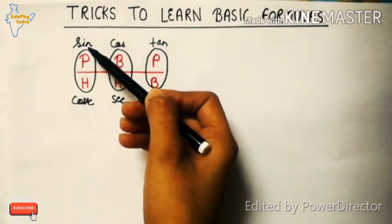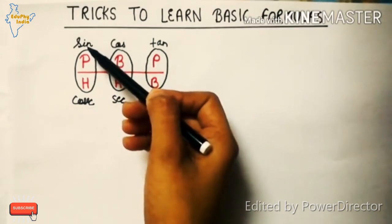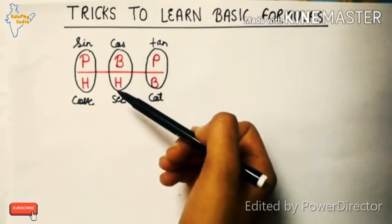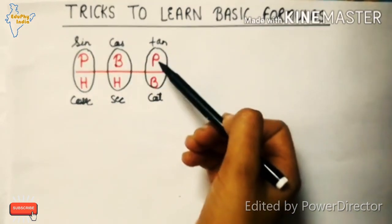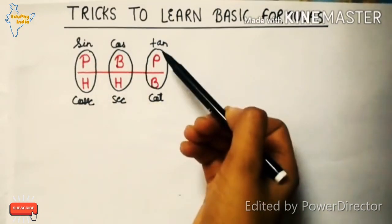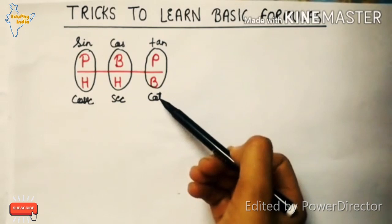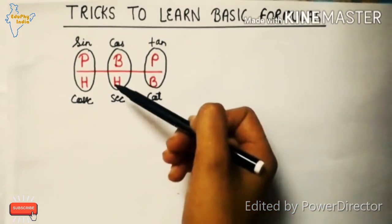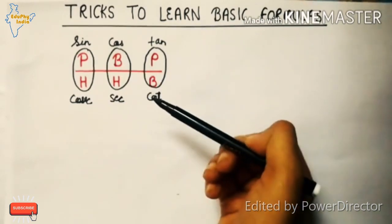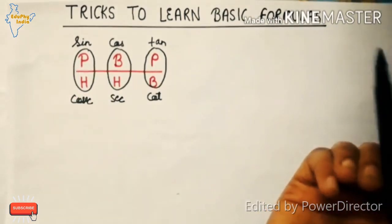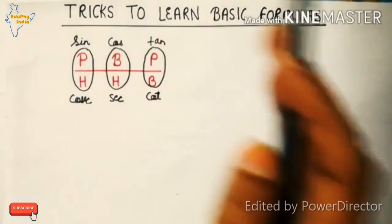So: sin theta is perpendicular upon hypotenuse, cos theta is base upon hypotenuse, tan theta is perpendicular upon base. For the reciprocals: cot theta is base upon perpendicular, sec theta is hypotenuse upon base, and cosec theta is hypotenuse upon perpendicular. This formula layout helps you easily learn all six basic trigonometric functions.